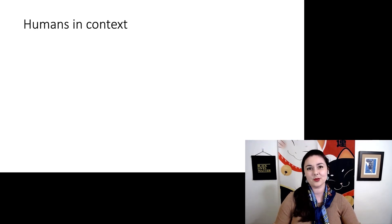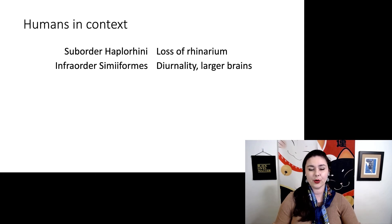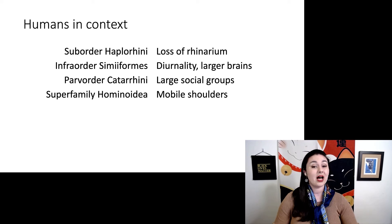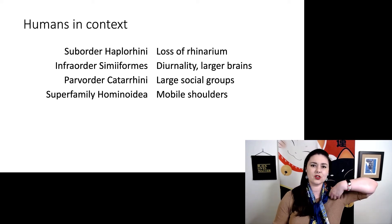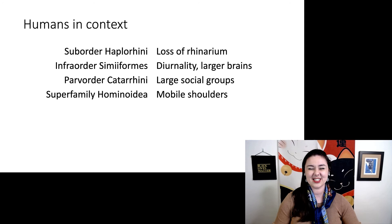Let's get more specific and talk about humans. Within primates, we are haplorhines, so we don't have a rhinarium. We are also anthropoids, or infraorder Simiiformes, meaning we are diurnal and have even larger brains, and we are very visually oriented. Then we are in parvorder Catarrhini, so we have larger social groups. We are in superfamily Hominoidea — we have really mobile shoulders because the ancestral hominoid liked to hang beneath trees, which is also what allows baseball pitchers to make those big throws today.